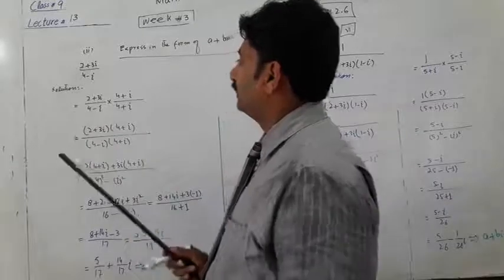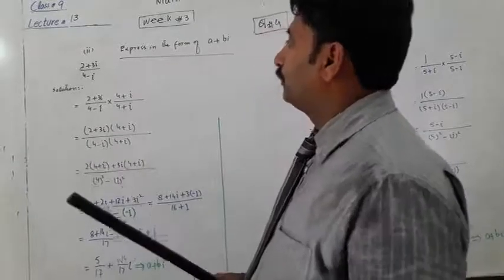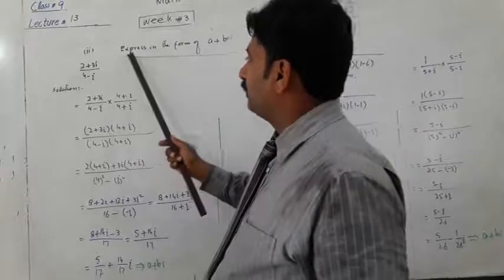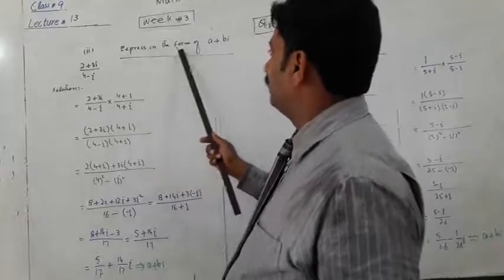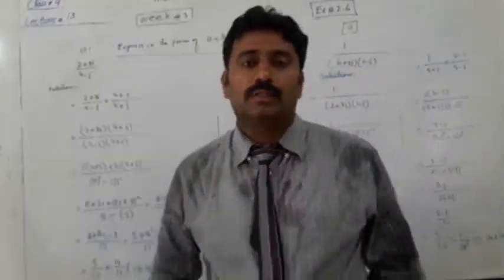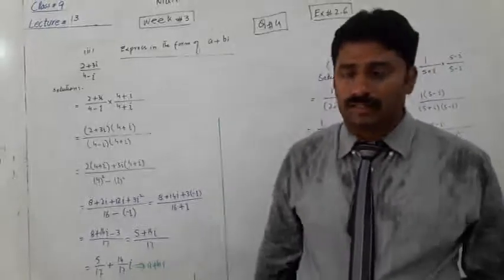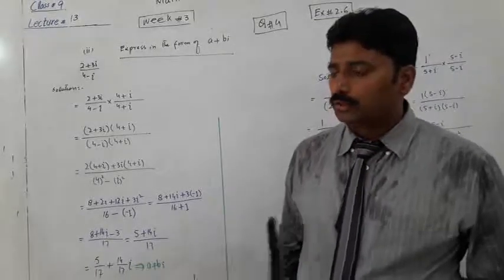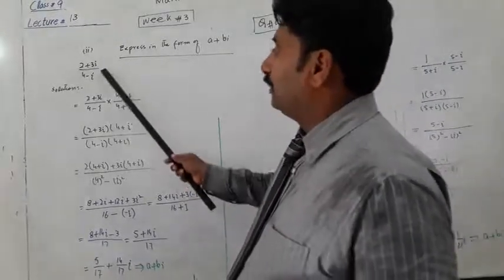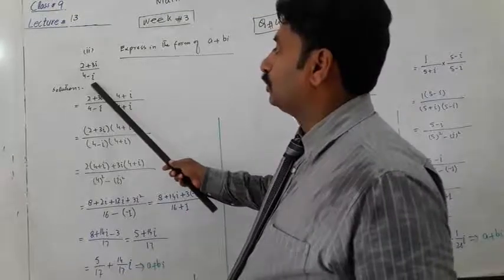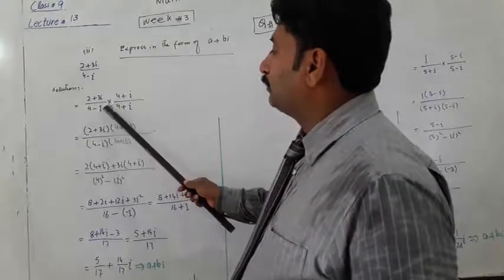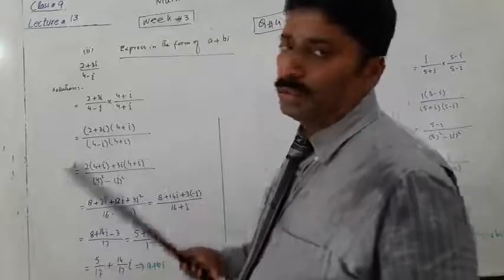This is the third part. So, the rule is that when we have a denominator in the denominator, we have to rationalize it.